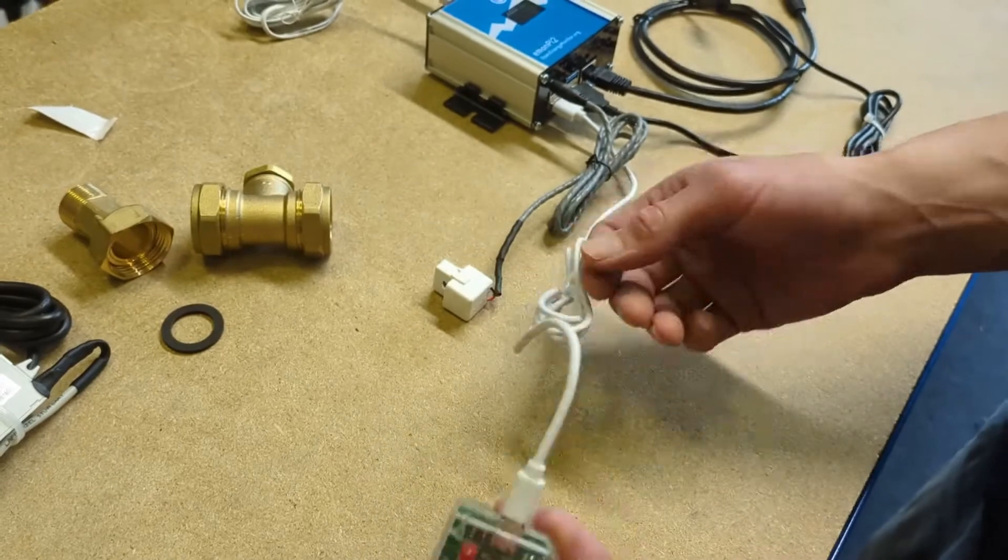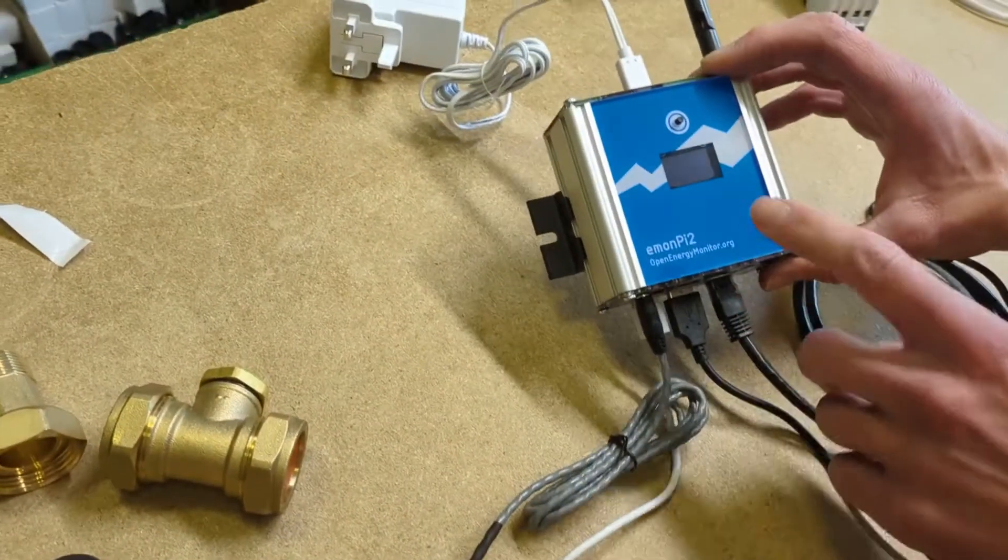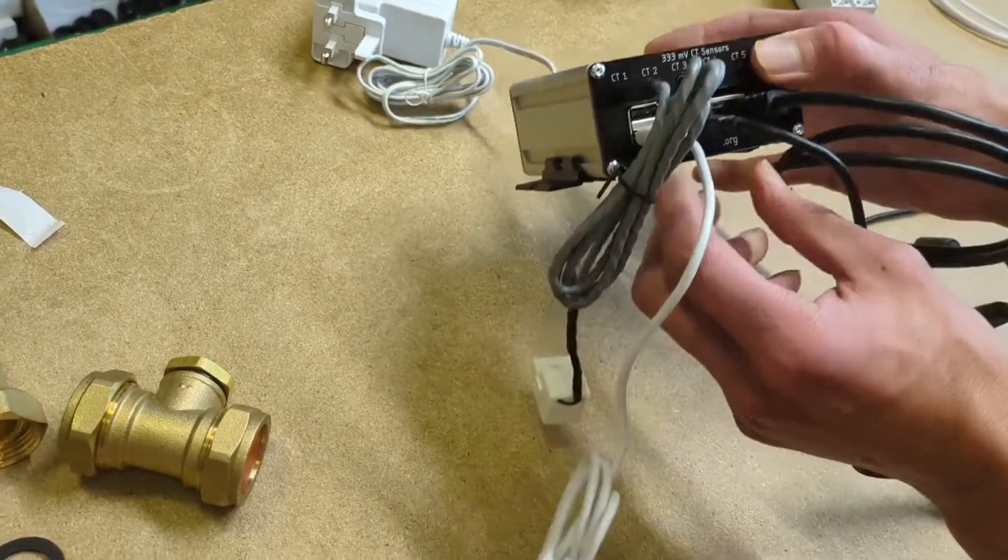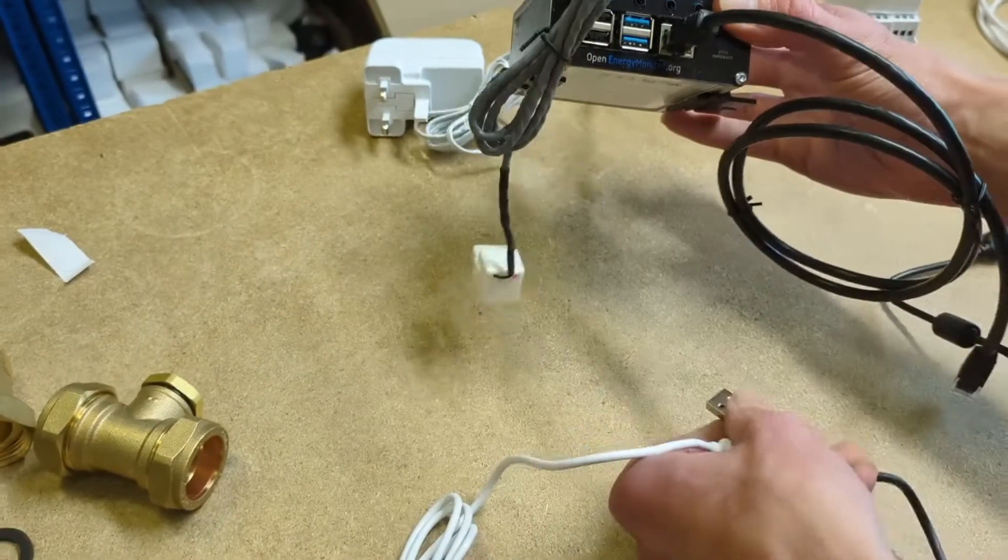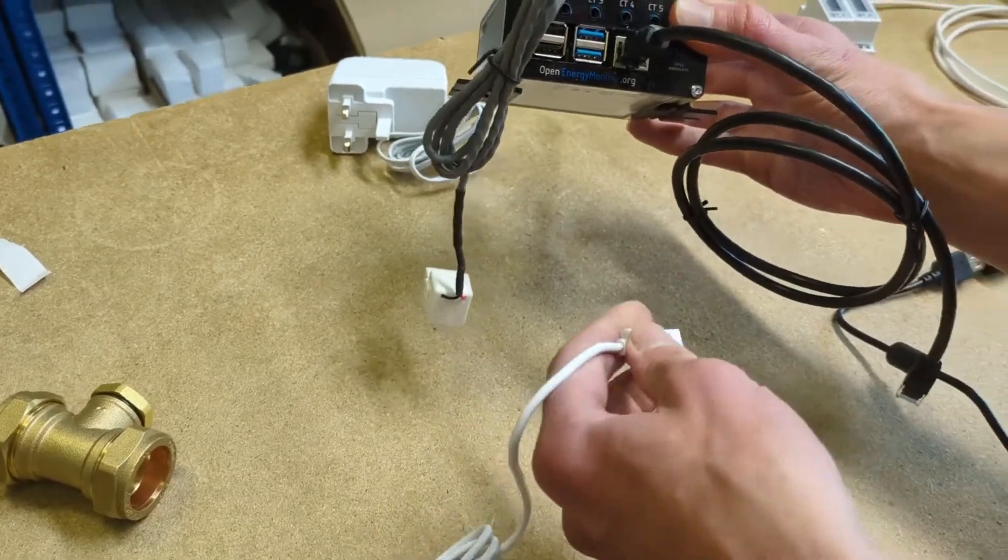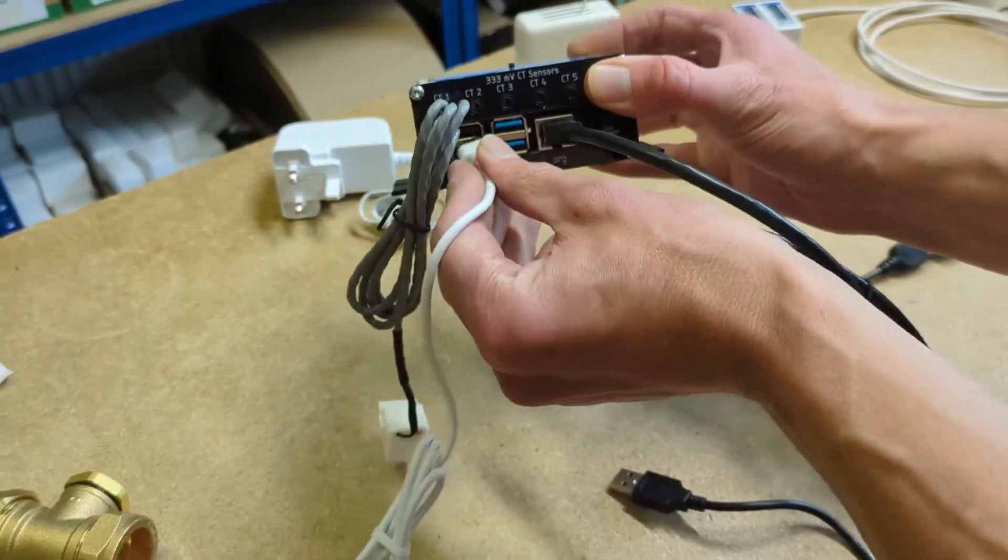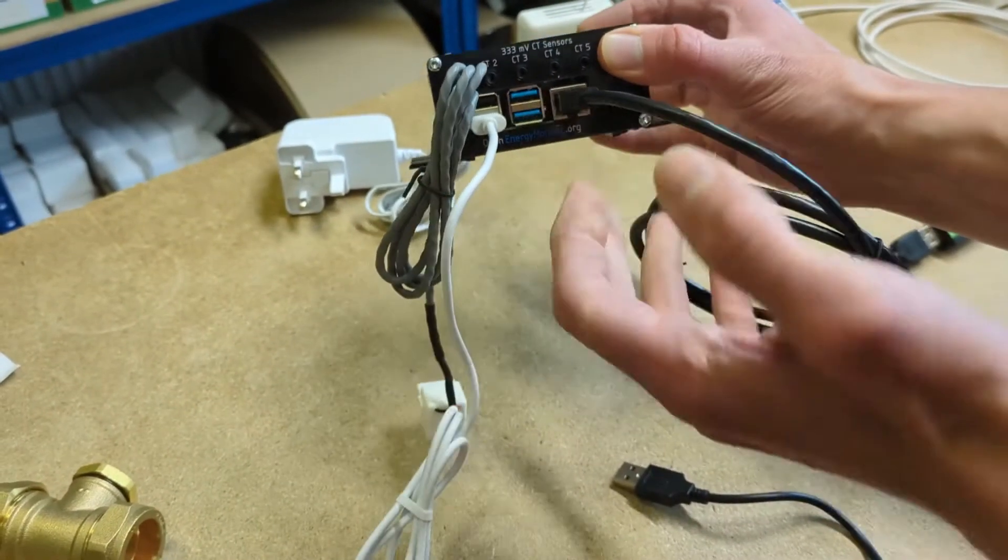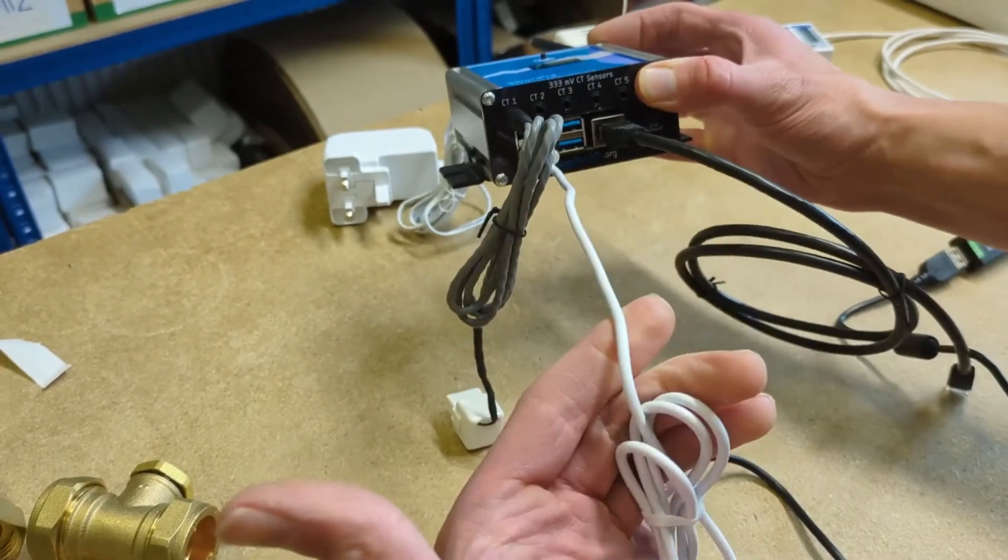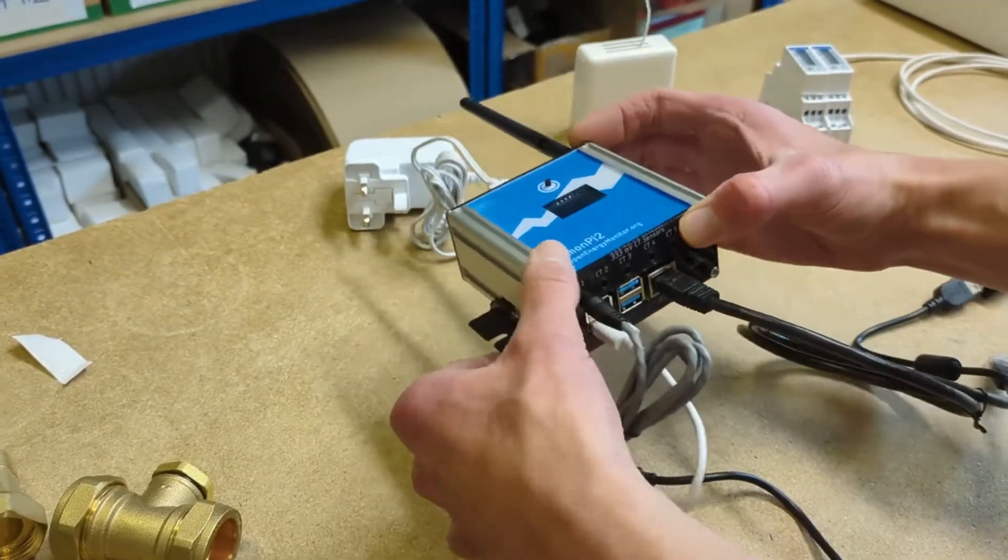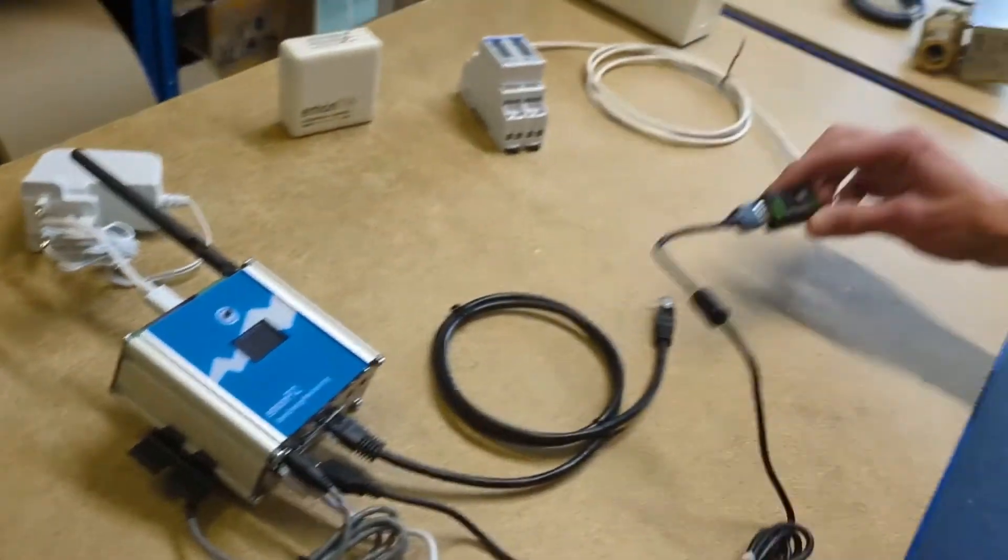This will all be pre-wired. The MBUS reader connects via USB into our data logger, the Emun Pi 2. You'll see on the front there's four USB ports, so it doesn't matter what USB port you use. You can plug the heat meter into any of them. The fact that they're blue or black has no significance for this application. So we'll plug the heat meter into one of them and then into another USB we can plug in the electricity meter part.